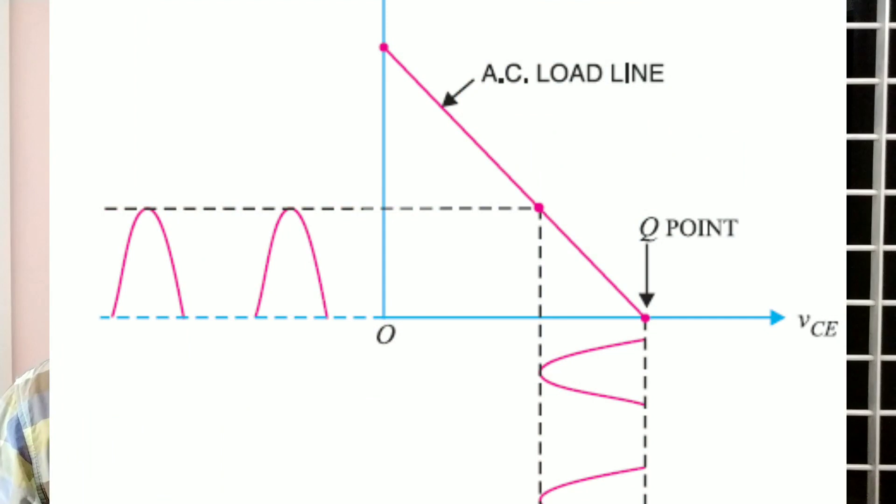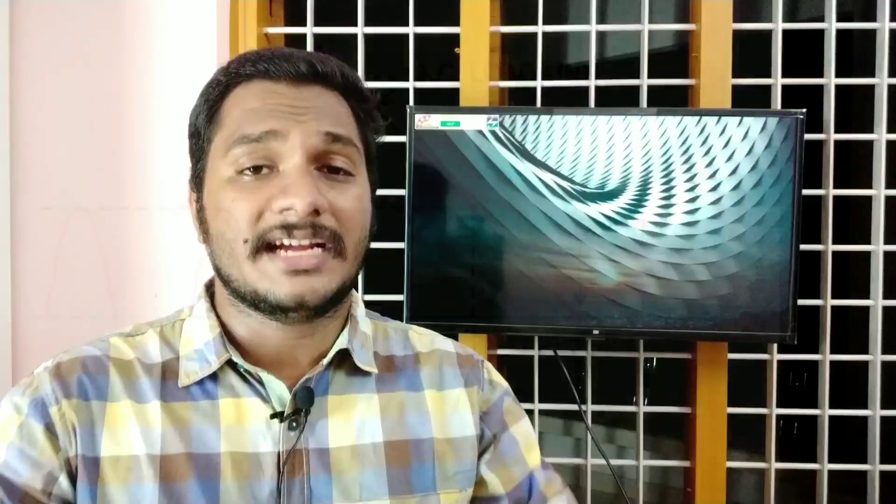In Class B we normally have a push-pull format. We have an NPN transistor handling the positive half cycle and a PNP transistor handling the negative half cycle. So we have a positive cycle and a negative cycle. However, there is a problem when transitioning between cycles — there is no negative cycle output during that transition.